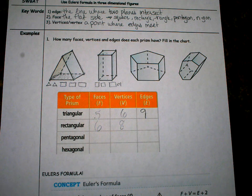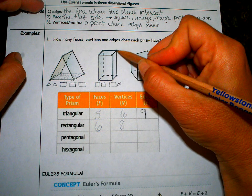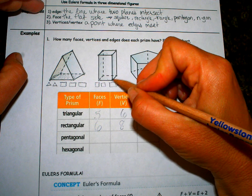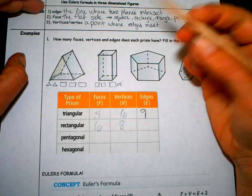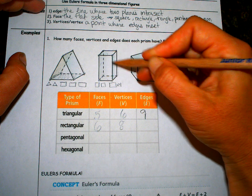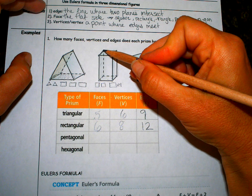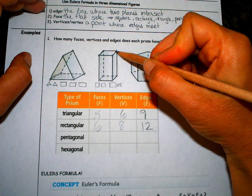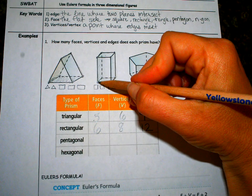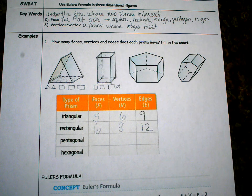And an edge. So let's do the square first. One, two, three, four, top square, bottom square, five, six, seven, eight. And now I'm going to go up and down. Nine, 10, 11, 12.